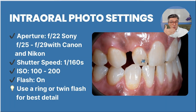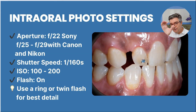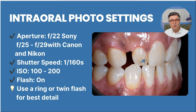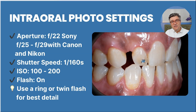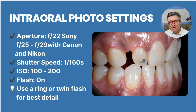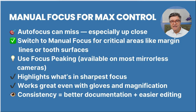Close the aperture to get the most depth of field. Sony lenses go only up to f/22; Nikon and Canon go a little bit higher. Use a fast shutter speed to avoid any shaking. ISO 100 to 200 — a lower ISO gives you more quality, although with the latest cameras you can go up a little bit more in your ISO to save some battery on your ring flash or lateral flash.